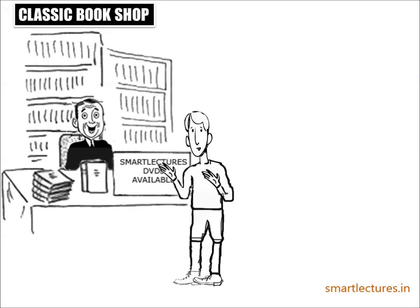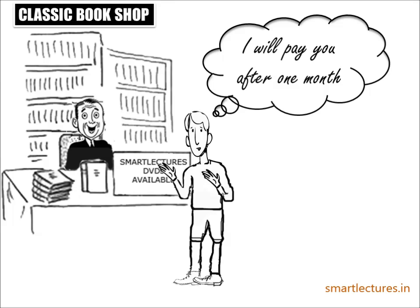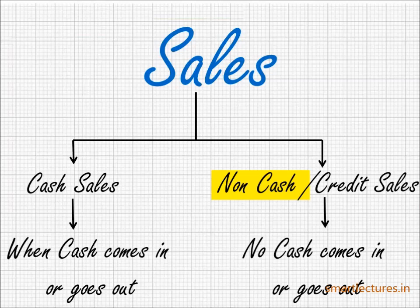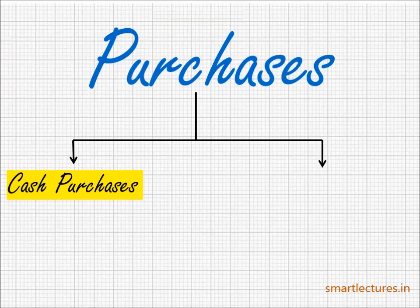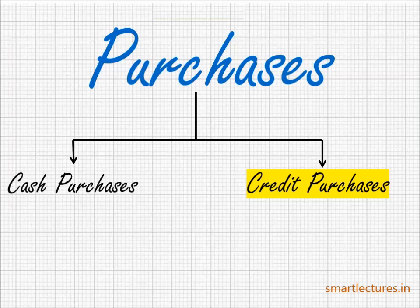For example, you sell the books to the customer but the customer doesn't pay you cash immediately. He promises he will come back and pay the money after one month, and you agree. This was a non-cash transaction — these sales will not be called cash sales but credit sales, because the person sold the goods but didn't receive any money. Similarly, if you buy goods but instead of paying cash immediately to the supplier, you promise to pay after one, two, or three months and bring the goods to your shop — these are credit purchases, not cash purchases, and this is a non-cash transaction.